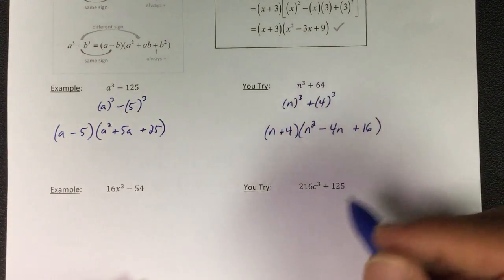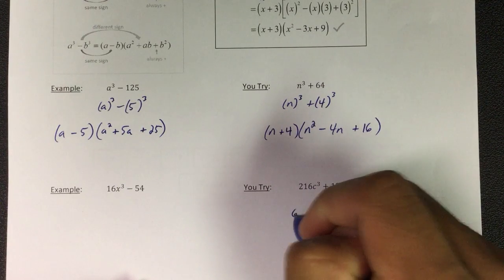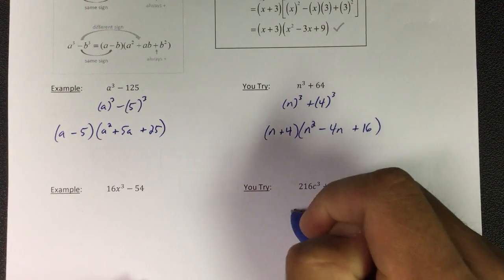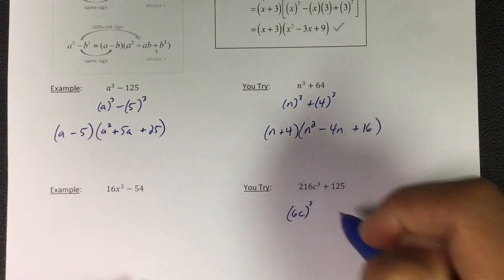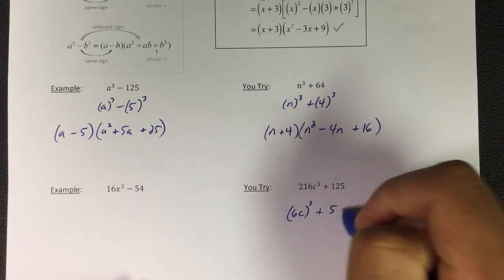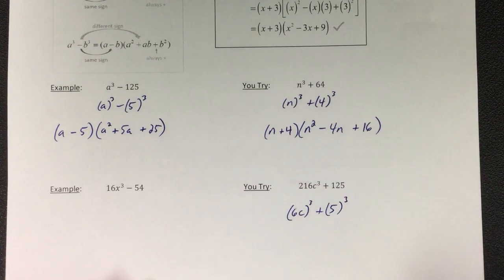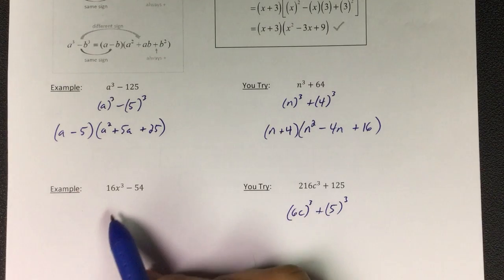So I put 6c to the third power plus 5 to the third power. This is probably the hardest one they have. This one's not so hard. I lied, that one's probably harder. I'll do them both, no big deal.